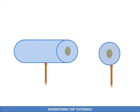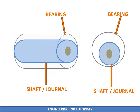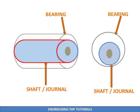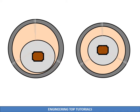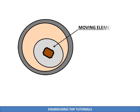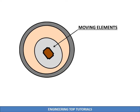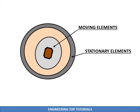It consists of a shaft or journal and a bearing. The shaft is placed in the bearing — the outer portion is the bearing and the inner portion is the shaft or journal. Between these two there is a lubricating oil. There is a very thin film of lubricating oil when the shaft is at rest. The rotation of the shaft creates a lubricating film between the shaft and bearing. This film is responsible for the smooth working of the shaft, and as the speed of the shaft increases, the thickness of the oil film also increases.